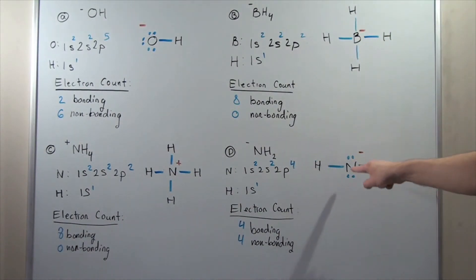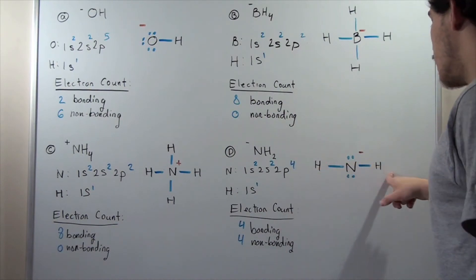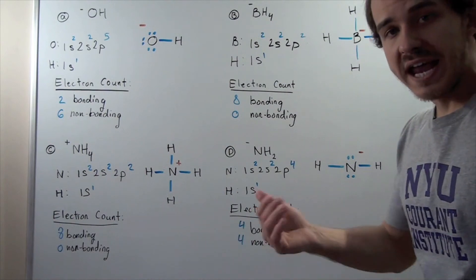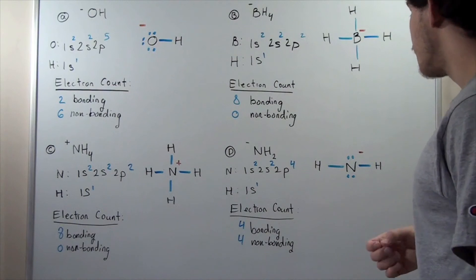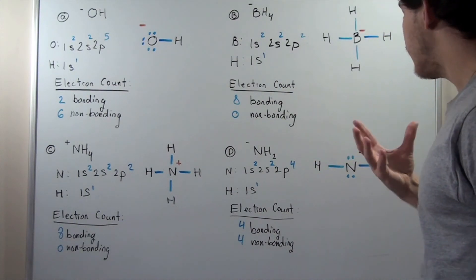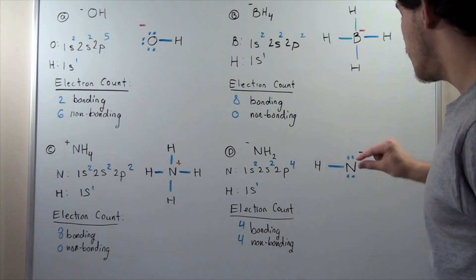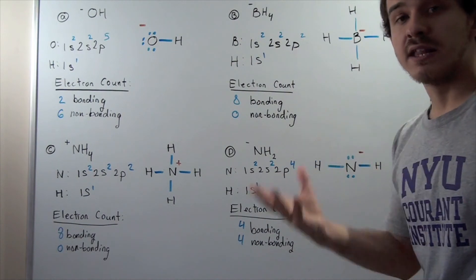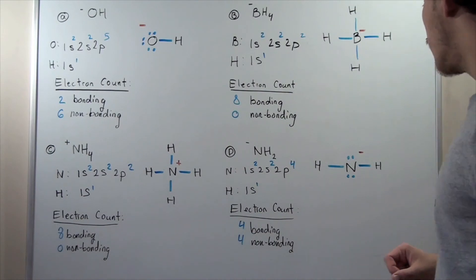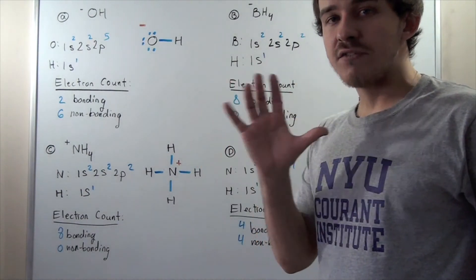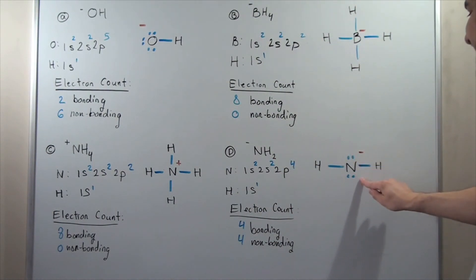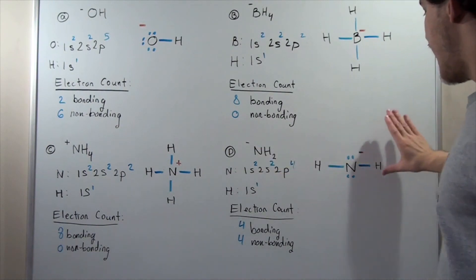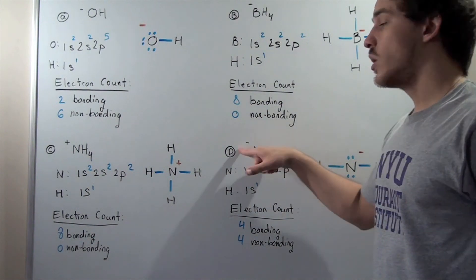We draw N in the middle as the central atom with H adjacent to it. Connecting the atoms uses four electrons in two covalent bonds, leaving four electrons remaining. Since H orbitals are filled, we place the remaining four electrons as two lone pairs on N. We now have four bonding and four non-bonding electrons — eight total. Because nitrogen is normally used to having five electrons and here it has six, N carries a negative one charge. The H's are neutral, giving a net charge of negative one. This is the correct Lewis dot structure for NH₂⁻.